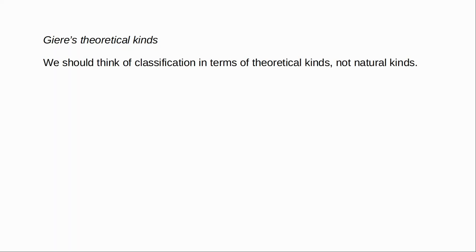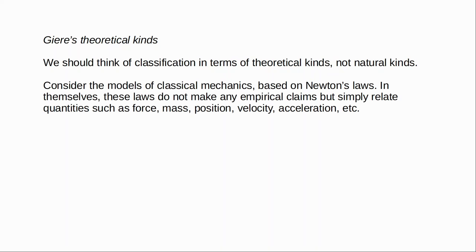To explain this concept, Giere gives the example of models in classical mechanics. We have various models based on Newton's laws, which form the general principles of classical mechanics. In themselves, Newton's laws don't actually make any empirical claims — what they do is relate quantities such as force, mass, position, velocity, acceleration, and so on. They don't tell us what specifically counts as a force or a mass in the world. These laws are important because they allow us to construct more specific models which do represent the world.